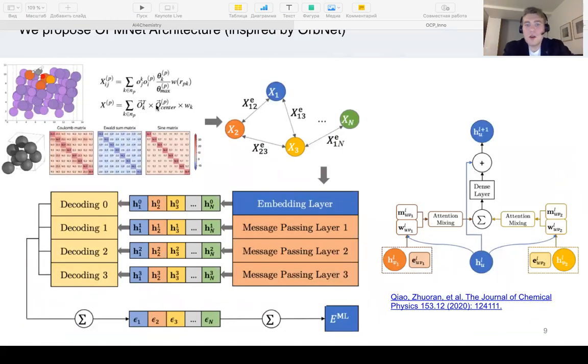Inspired by the well-known OrbNet architecture, which used featurization of molecules in terms of symmetry-adapted atomic orbitals, we proposed the so-called OFM network from the orbital field matrix. The first step is low-cost featurization performed for atoms as nodes and bonds as edges. Then these node and edge attributes are processed by the embedding layer and message passing layers.